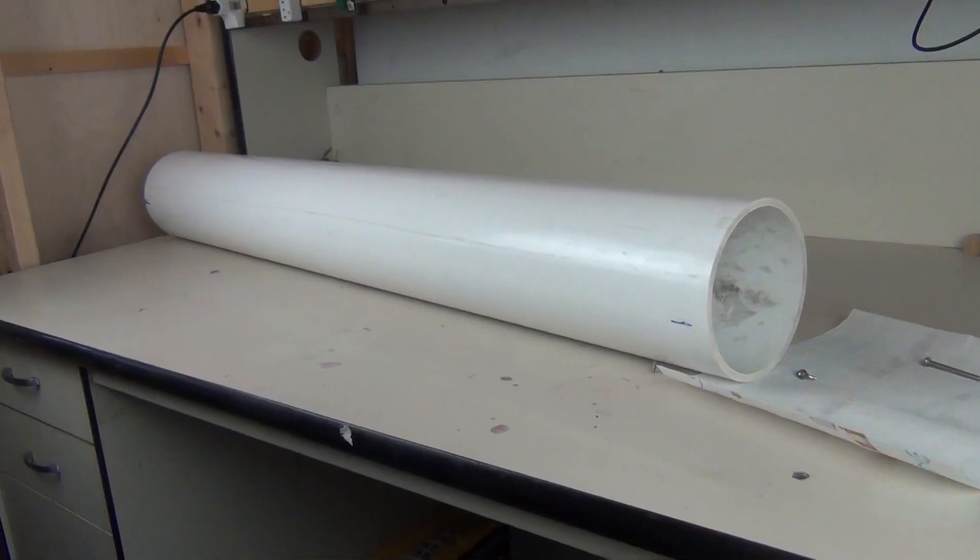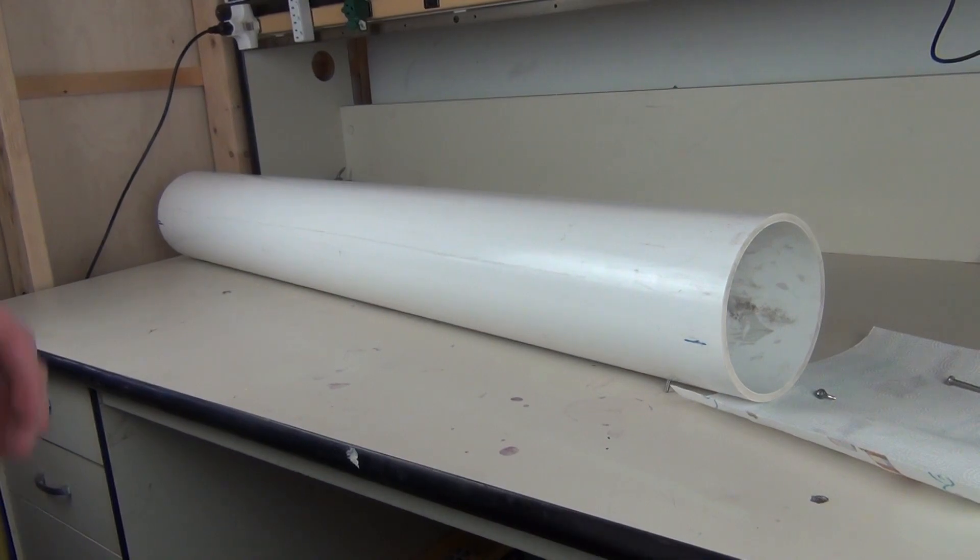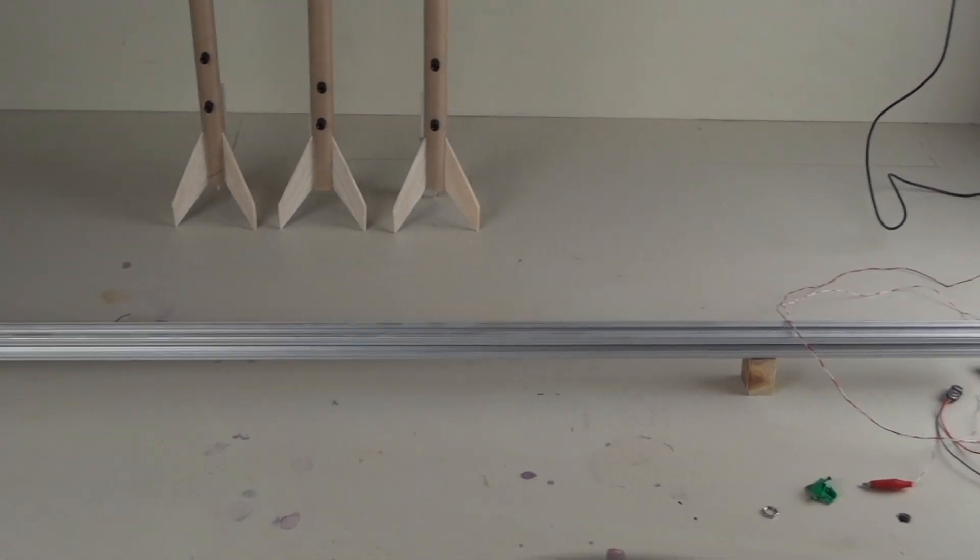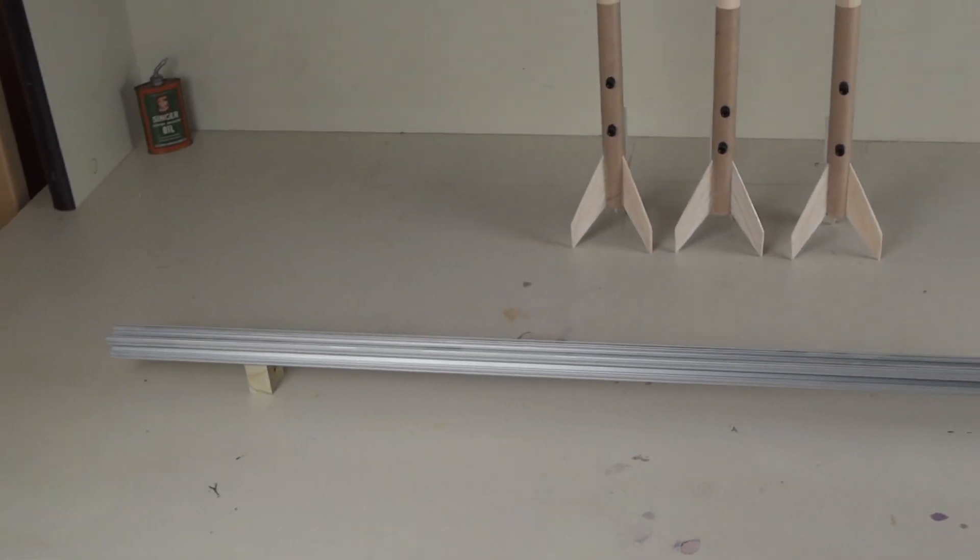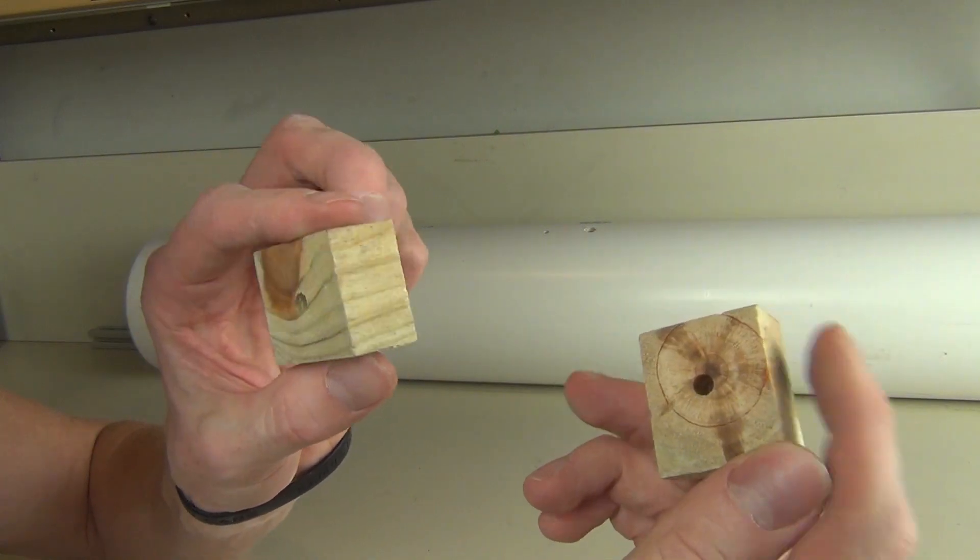This rocket launcher was really easy to build. It consists of a piece of 6 inch diameter PVC pipe, as well as a piece of 8020 extruded aluminum. The extruded aluminum gets mounted to the PVC pipe using some nuts and bolts, as well as two wooden blocks.